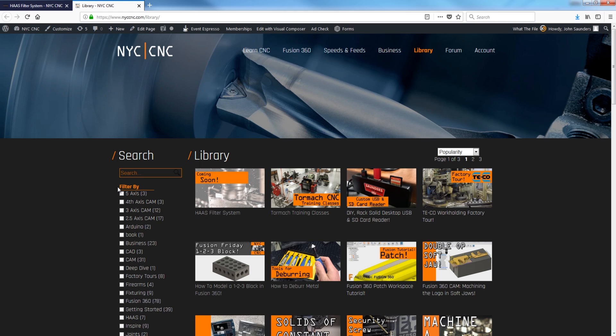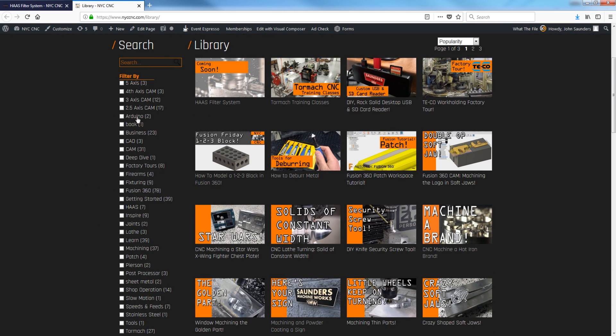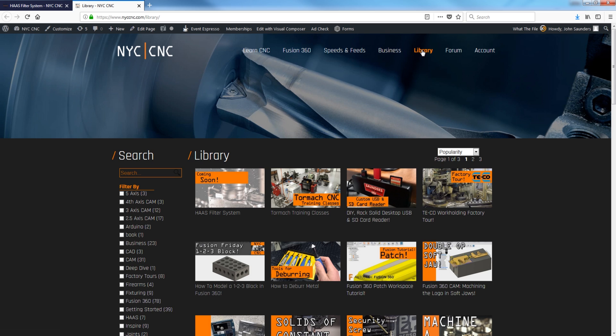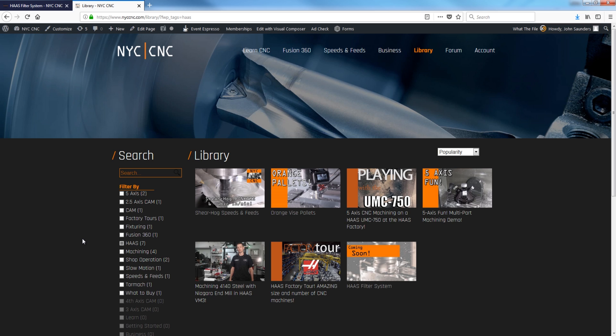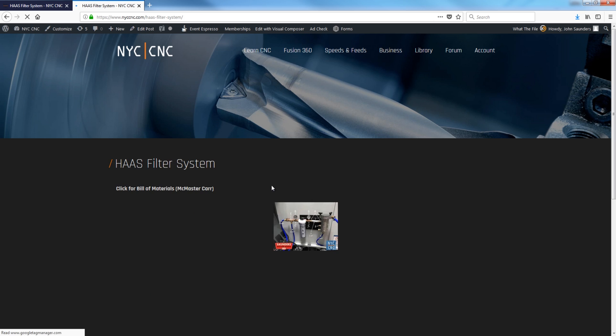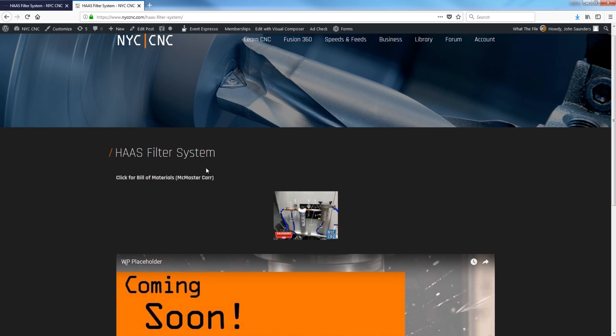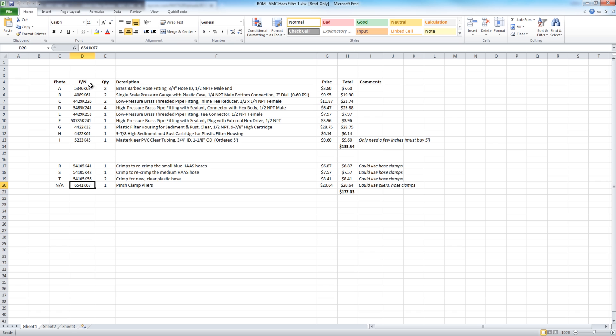So how do you build your own? If you head over to the NYC CNC website, you can use the library in this smart search. So you could search for filter, or you could even click Haas, and these tags automatically update and say shop operation, and you'll see Haas filter system. It won't say coming soon when this video is out. And we've got a link to the bill of materials. And we walk through each part number, the quantity required, the McMaster description, as well as some overall or general comments. You can see the total comes to $133.